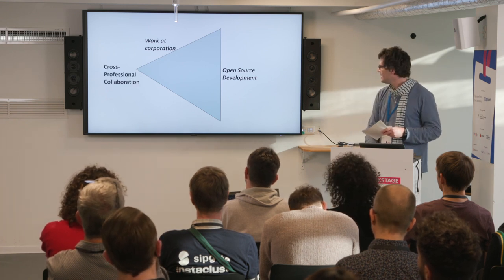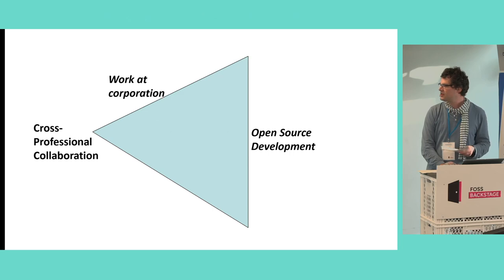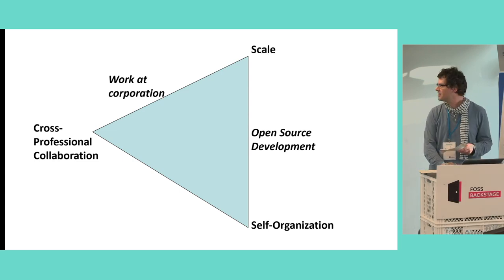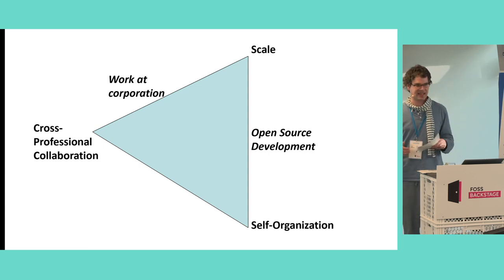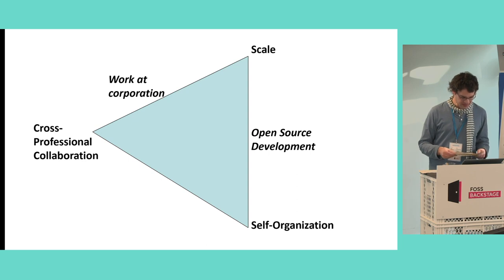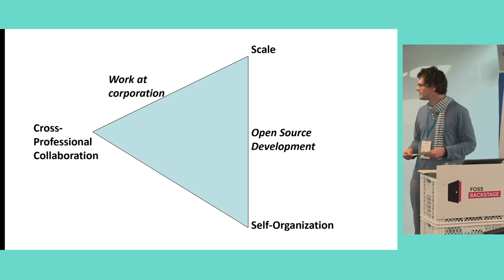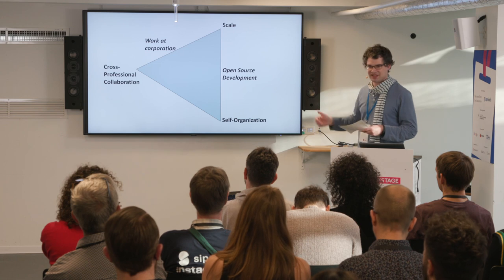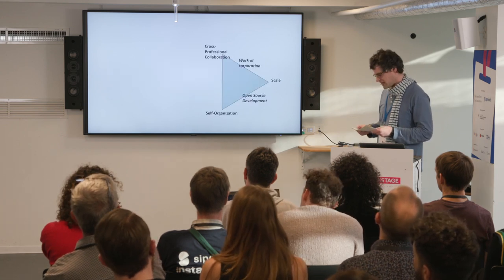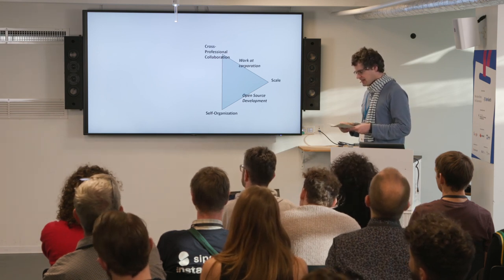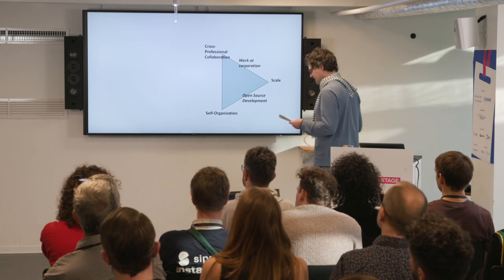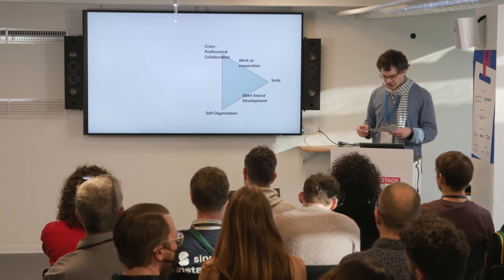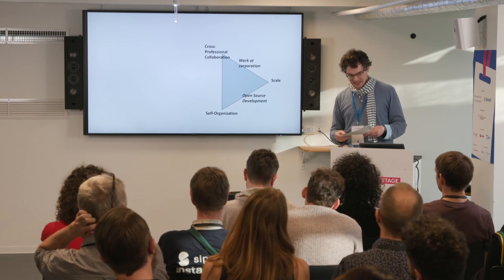Let's put that into a model. You have work at a corporation, which seems to be really good at cross-professional collaboration mediated by management. You have open source development, which seems really good at self-organization around code. What both sides are kind of good at is producing big-scale models. You will have noticed one side doesn't have a label yet — so, no model is true but some models are useful. What would be on the other side, following that model, would need collaboration and self-organization but could be small — people working together in small teams without the overhead of large corporations and management.